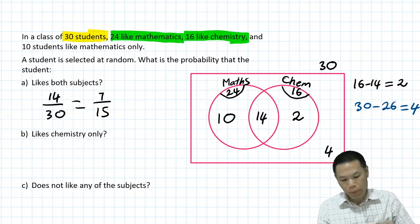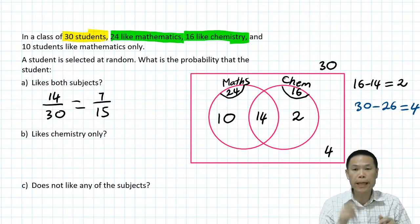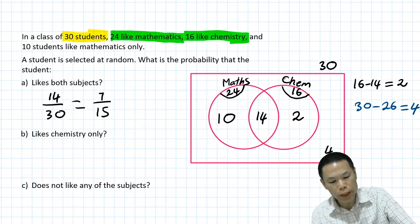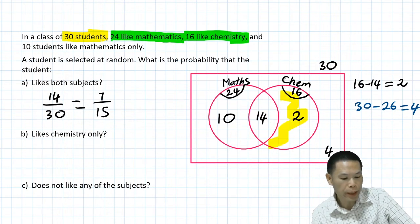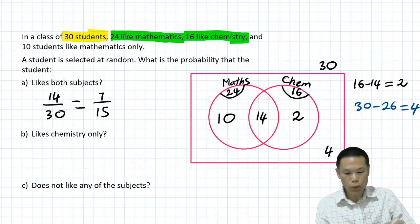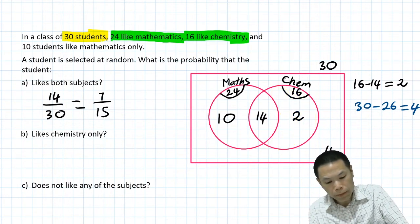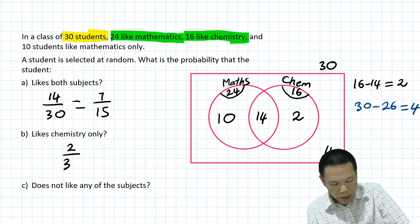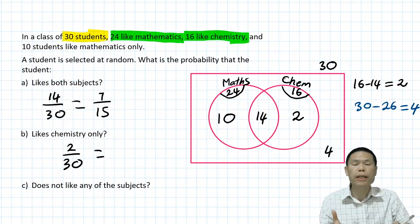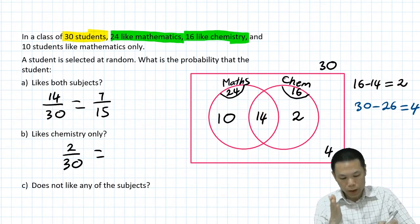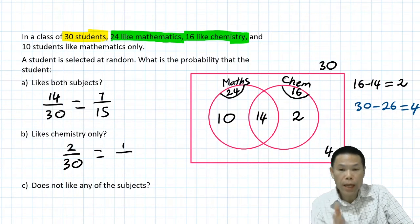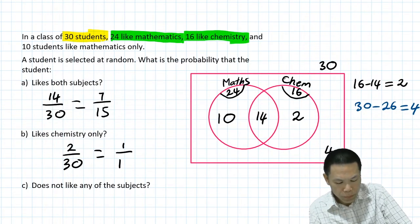Let's move on to Part B. What is the probability that the student likes chemistry only? Chemistry only is in this region here, and that is 2 students. So the probability is 2 out of 30. We simplify by dividing both by 2: 2 divided by 2 is 1 and 30 divided by 2 is 15. So the answer is 1 over 15.